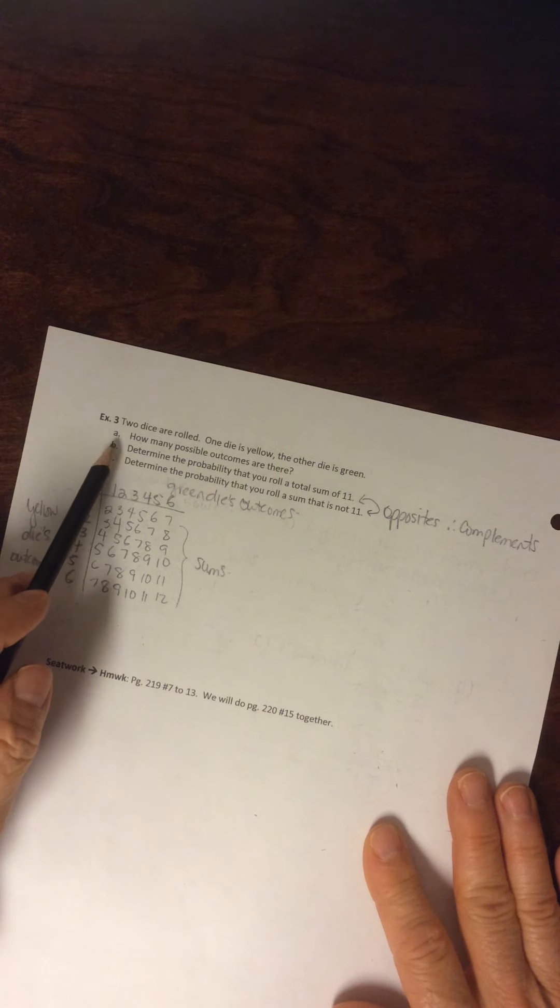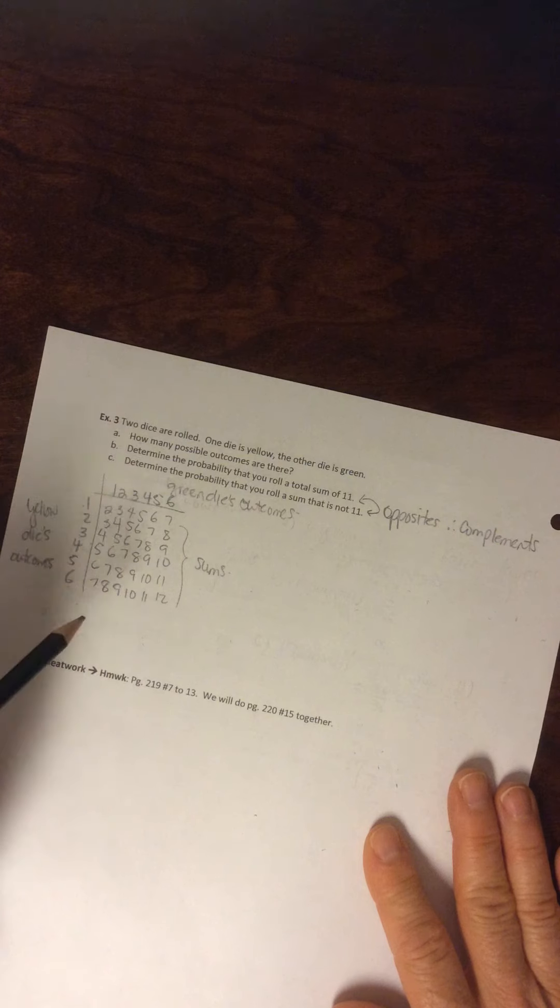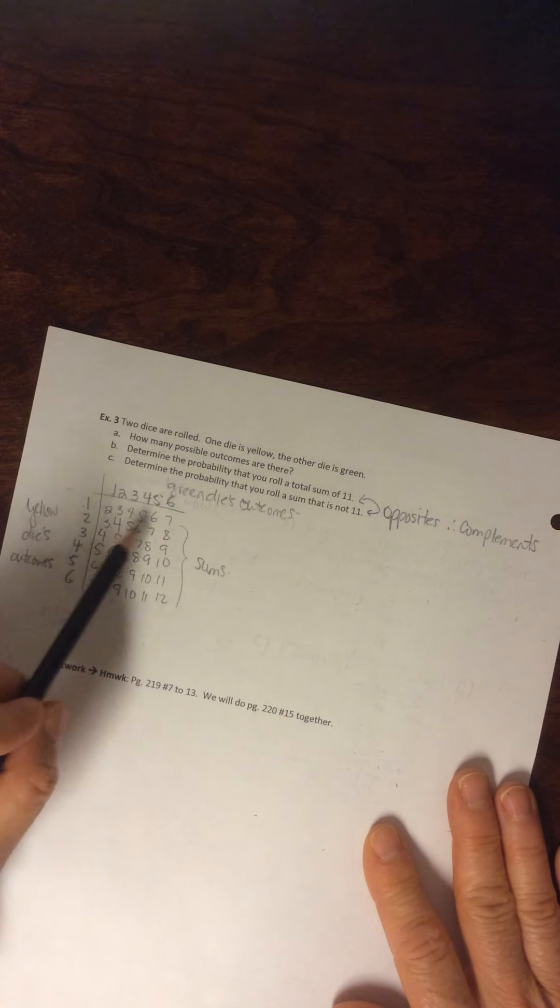It says how many possible outcomes are there. So you can count how many you've got, or you could say, oh, I've got six rows, and I've got six columns.